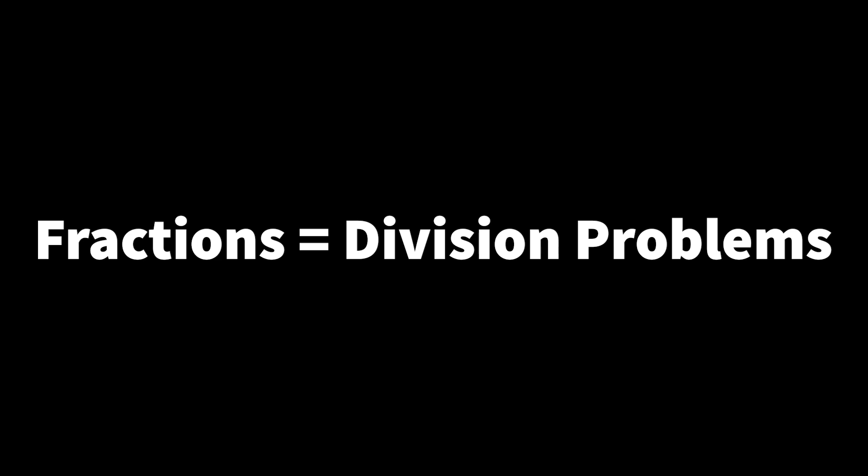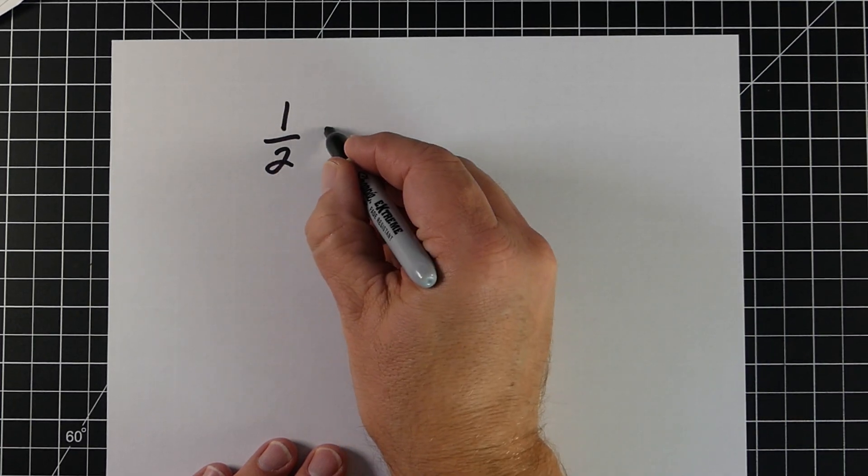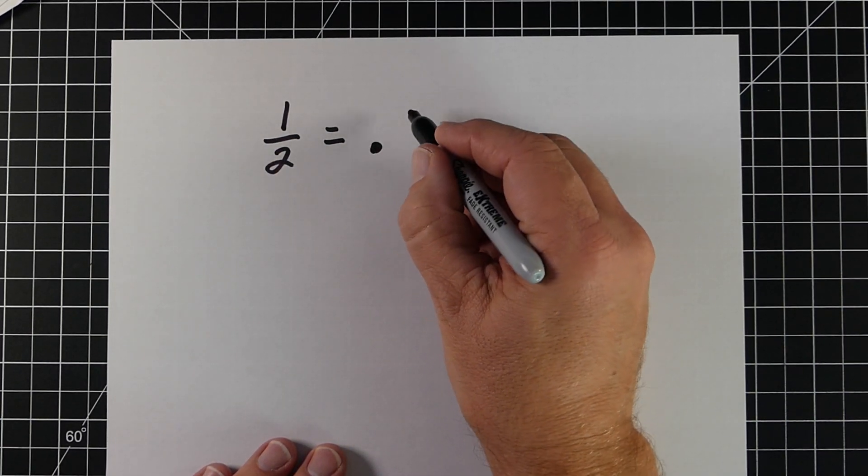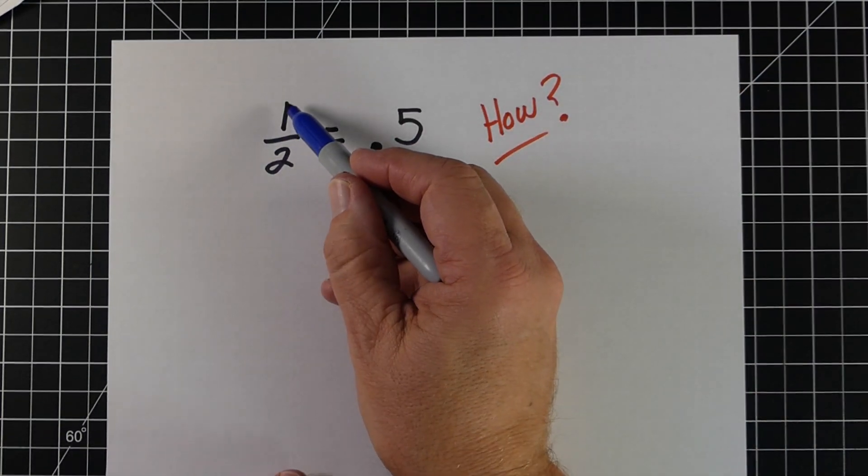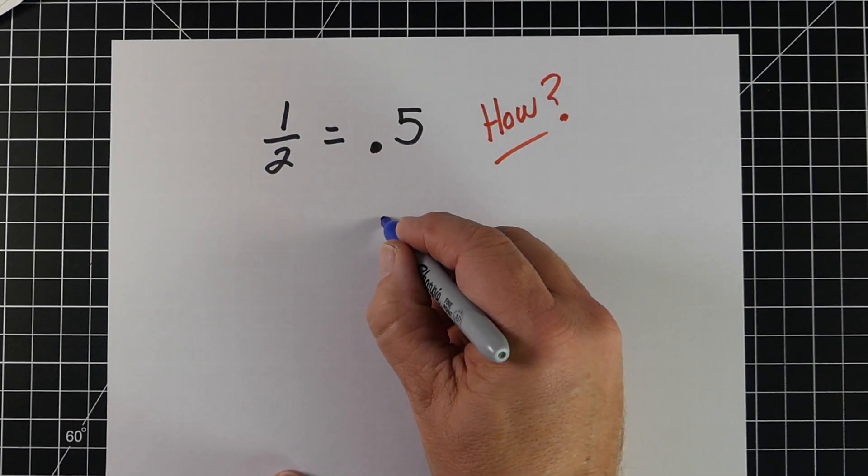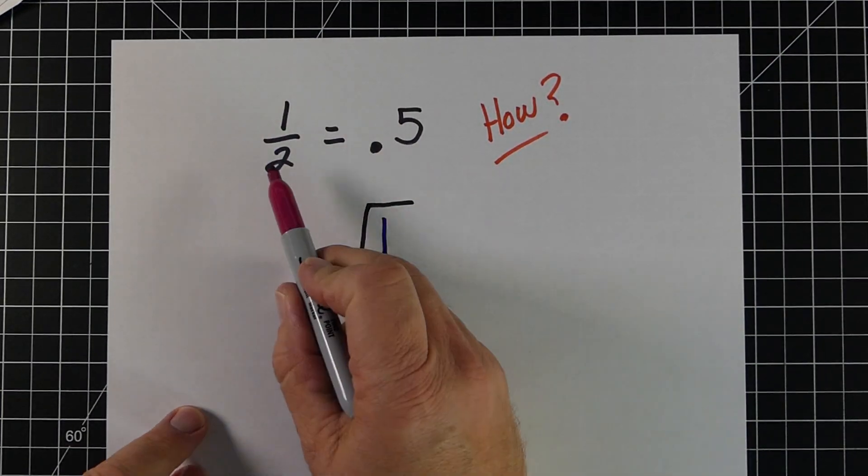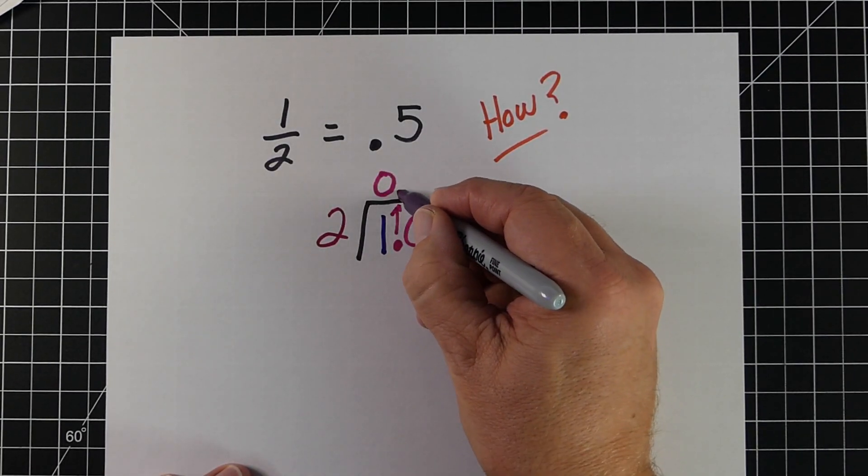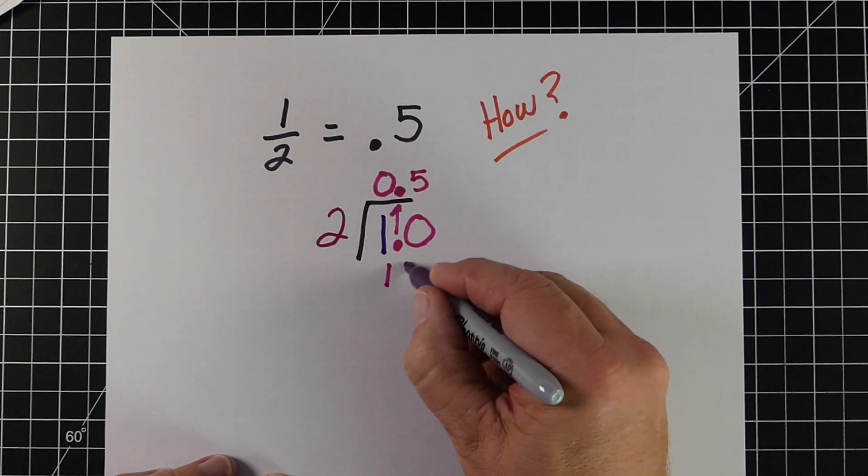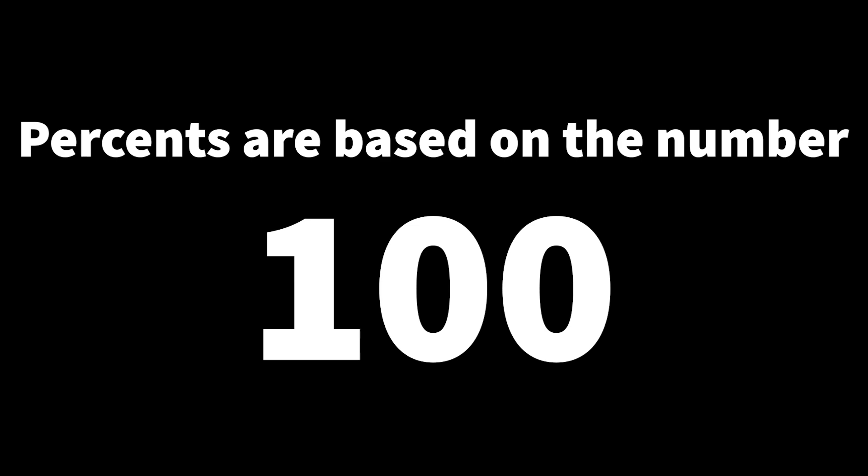When we're working with percents, decimals, and fractions, there's two key concepts we really need to take a look at. Number one: fractions are nothing more than division problems. So most of us are probably familiar with the fraction 1 half, and we probably even know that the decimal for it is 0.5. But the question is how? That's because the fraction 1 half is really a division problem - it's 1 divided by 2. When we divide 1 by 2, we know 2 can't go into 1, so we add a decimal and a 0. 2 goes into 10 five times, and there's no remainder, so we get 0.5.